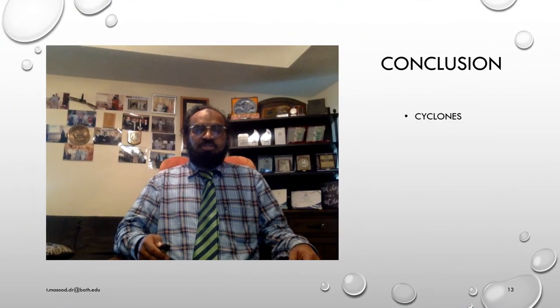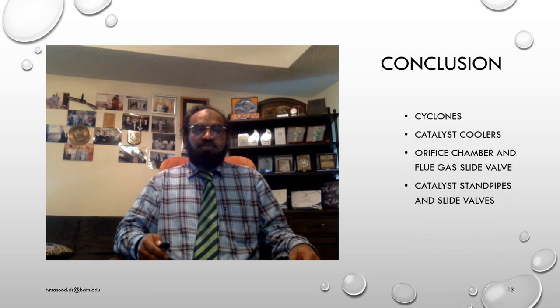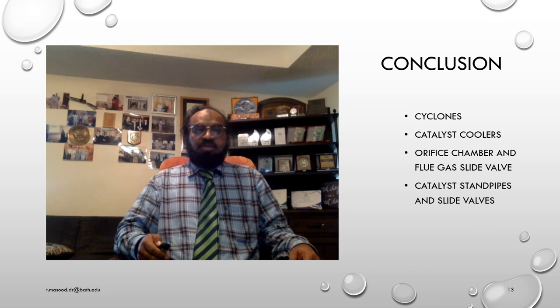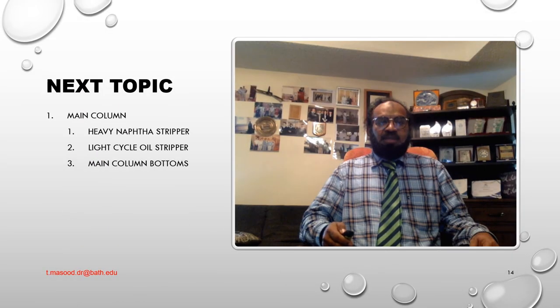Conclusion: in this lecture we discussed cyclones, catalyst cooler, orifice chamber, flue gas slide valve, catalyst standpipe, and reactor assembly. The next topic we are going to discuss is the main column, including heavy naphtha strippers, light cycle oil, strippers, main column bottoms.